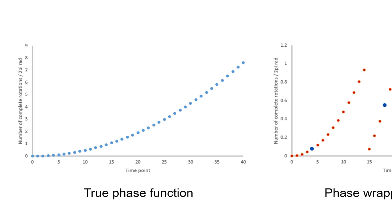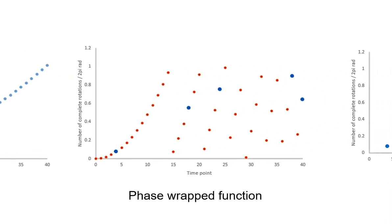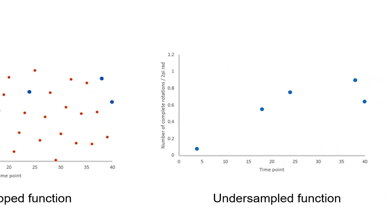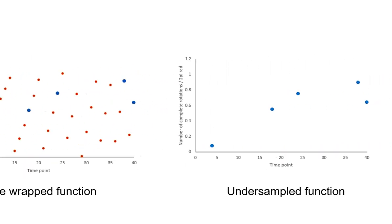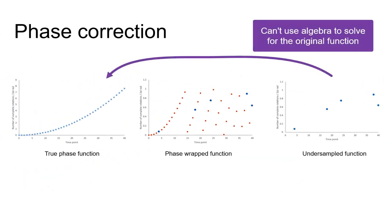As explained in the Absorption Mode 101 video, the difficulty is that in most mass spectra the phase correction function is under-sampled and so it can't simply be solved algebraically. Therefore we have to find other ways to solve it.